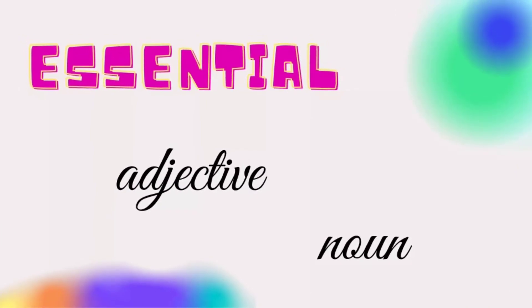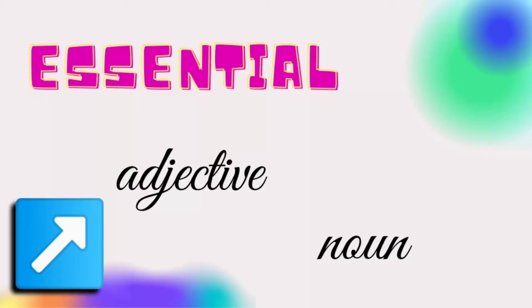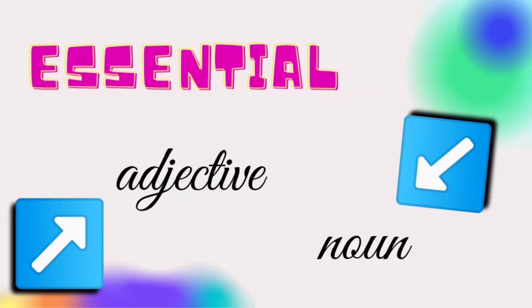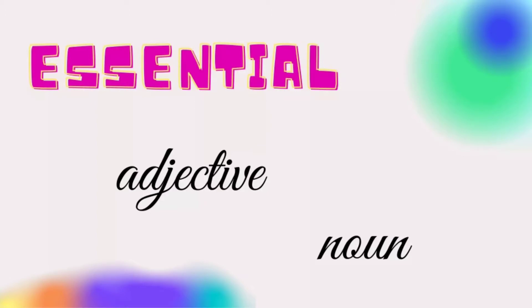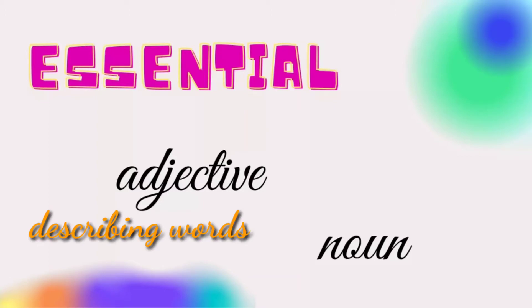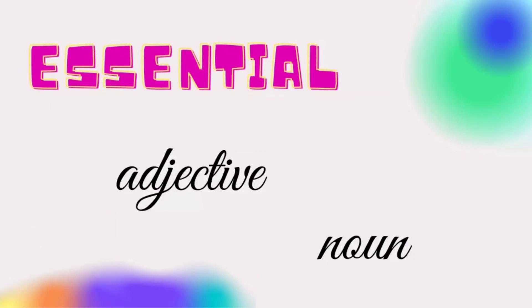From my research, I found out that essential has both an adjective meaning and a noun meaning. Adjectives are describing words — they describe a noun or a pronoun. A noun, on the other hand, is a part of speech which names a person, place, thing, animal, or an idea. In this video, expect that we will discuss how essential is used as an adjective and how essential is used as a noun.